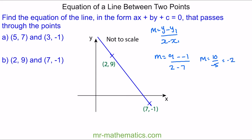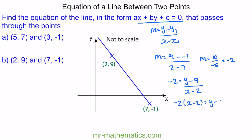Now I can work out the equation of the straight line by putting negative 2 back into this equation. So negative 2 is equal to y minus y1. I could choose either coordinate but I'm going to choose (2, 9) because they're both positive. So y minus 9 over x minus 2. I'll rearrange this: negative 2 lots of x minus 2 is equal to y minus 9. I'll expand the brackets and make the equation equal to zero — and this is the equation of the line.